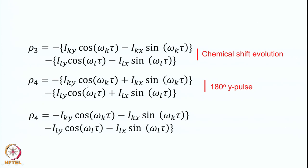The difference now comes: we are applying a pulse along the Y axis and not along the X axis. What does it do? If it is along the Y axis, this term does not change — Iky is invariant. It remains as Iky, whereas Ikx goes to minus Ikx, and therefore this becomes plus. So this becomes plus Ikx sin(omega_k tau). Similarly, minus Iky cosine(omega_k tau) remains, and this becomes plus Ilx sin(omega_l tau).